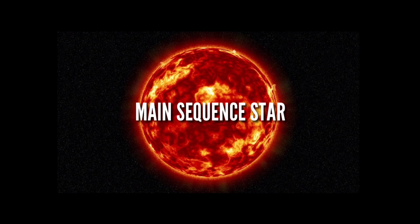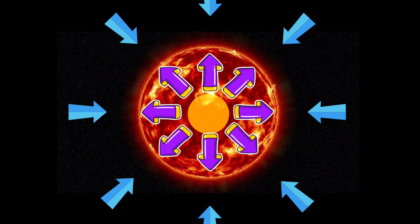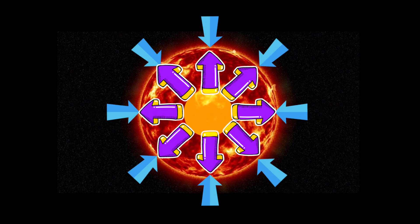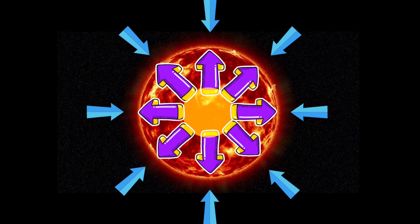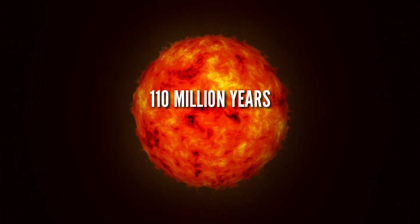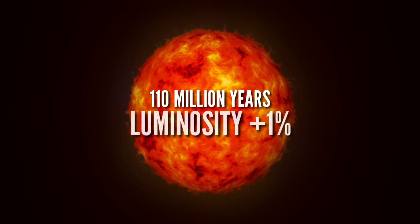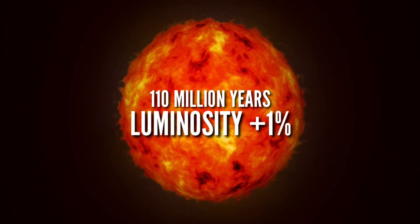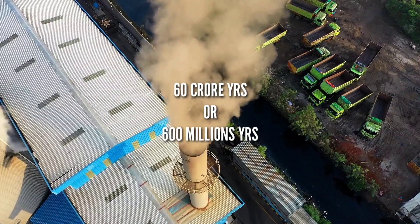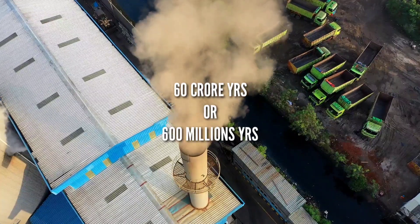The main sequence star is the main stage of the sun's life. As hydrogen is depleted, the sun becomes increasingly bright. The carbon dioxide and carbon oxide levels become strong.